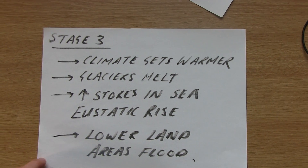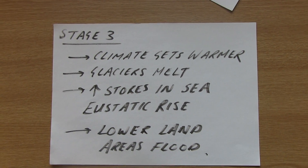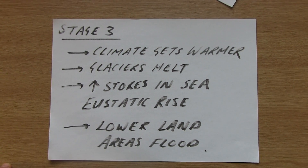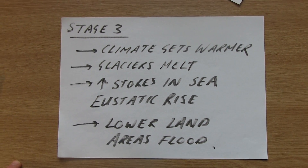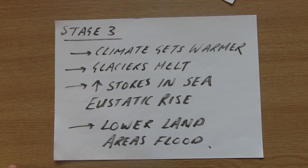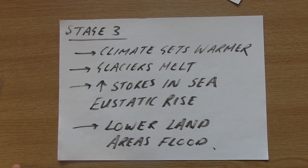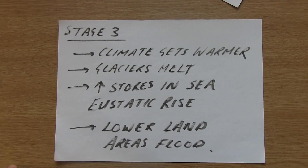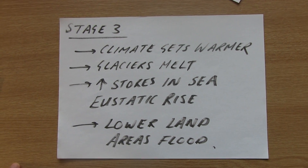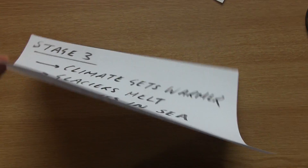Stage three: the climate gets warmer. When the climate warms, glaciers start to melt, which increases the amount of water in the sea and causes eustatic rise — the period we're in at the moment with global warming. Lower land areas will tend to flood, so places like modern-day Bangladesh will find themselves in problems as a consequence of eustatic rise in sea levels.